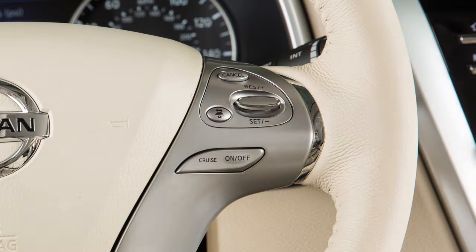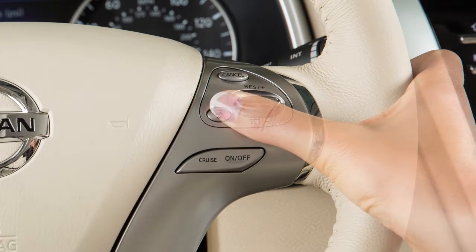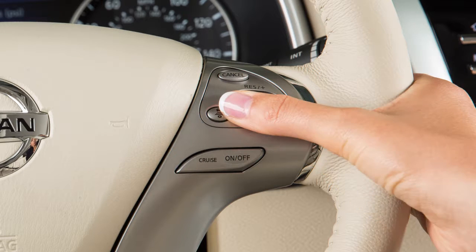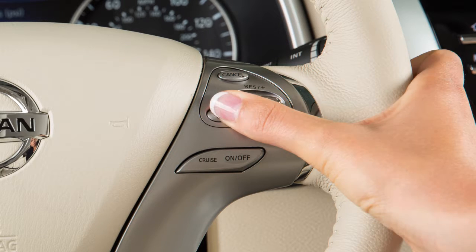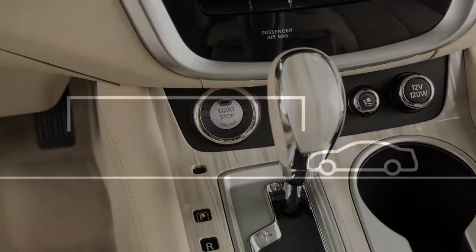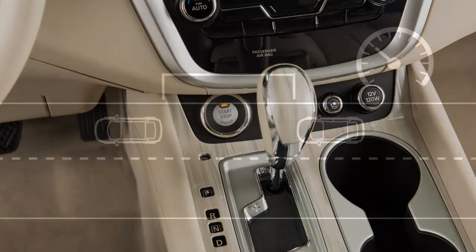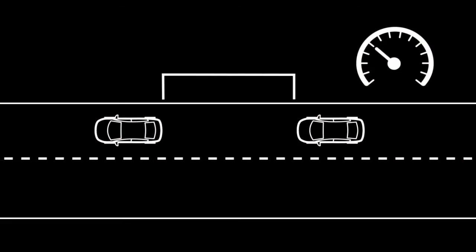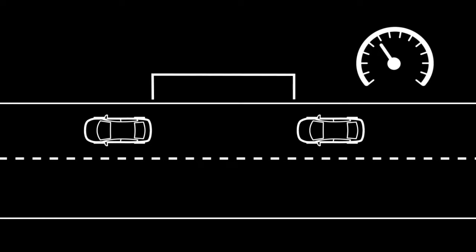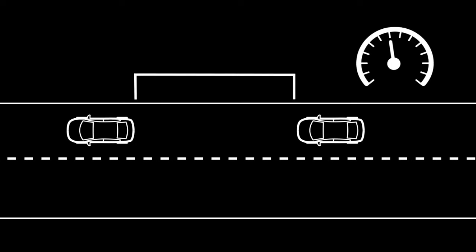To change the distance to the vehicle ahead, push the distance switch. Each time the distance switch is pushed, the set distance will change to long, average, short, and back to long again in that sequence. Every time the engine is started, the initial setting becomes long. The distance to the vehicle ahead changes according to the vehicle speed — the higher the vehicle speed, the longer the distance.